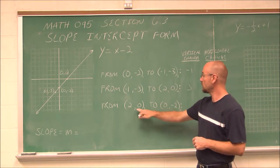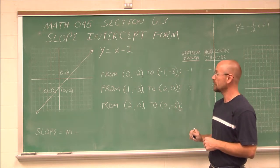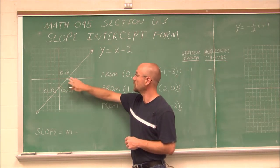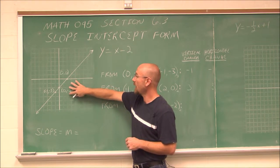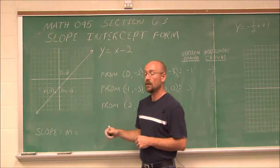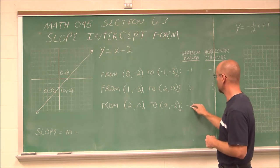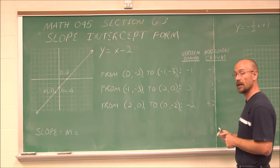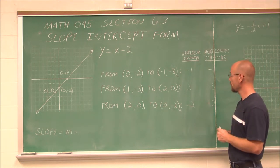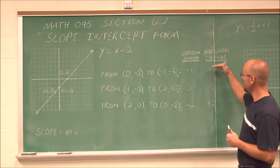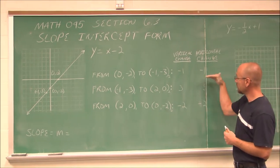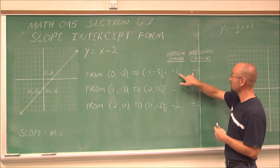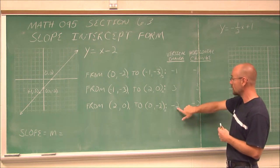If we want to go from the point (2, 0) to the point (0, -2), we have to go down 2 and to the left 2. Down 2 is negative as a vertical change, and left 2 is negative as a horizontal change. Now, what we want to consider is: maybe we see a pattern. These values are equal and they always have the same sign — both negative, both positive, both negative.